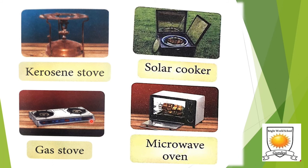Nowadays, environment-friendly appliances such as solar cookers are being used to cook food. They use direct sunlight to heat or cook. Microwave ovens use electricity to cook food very quickly and at high temperature.